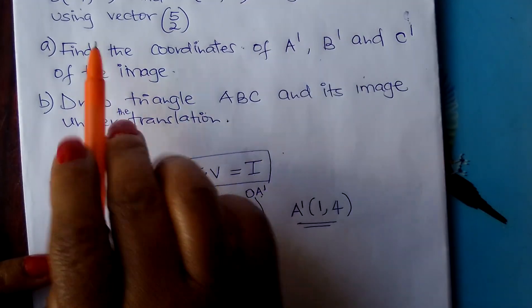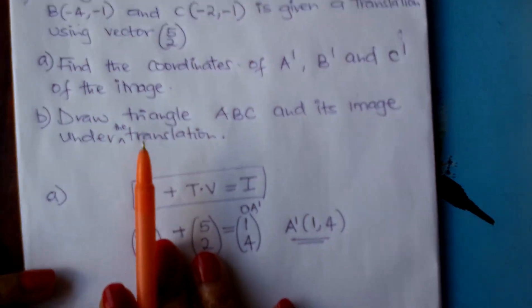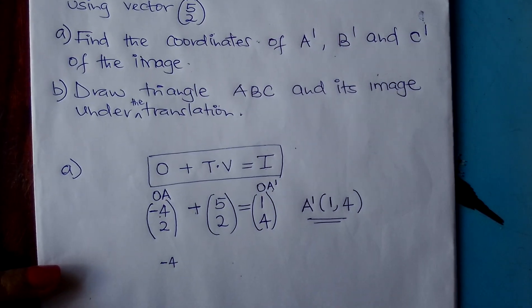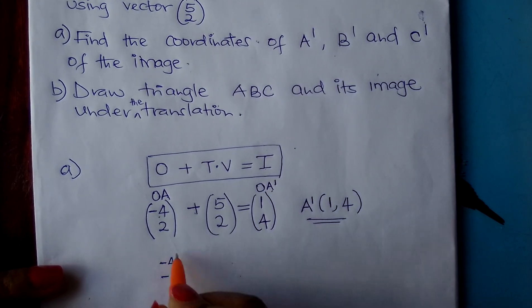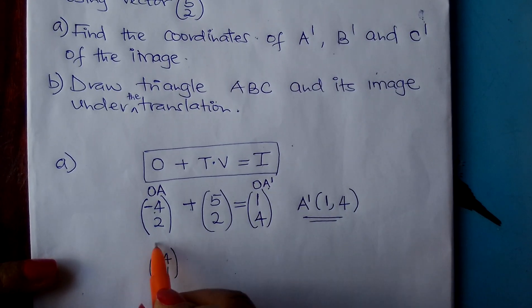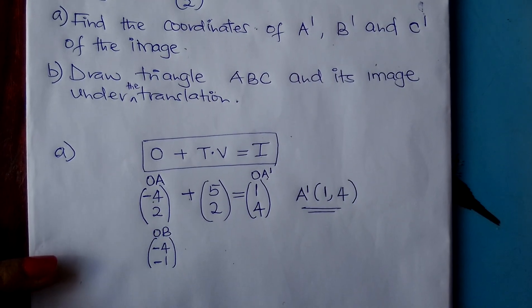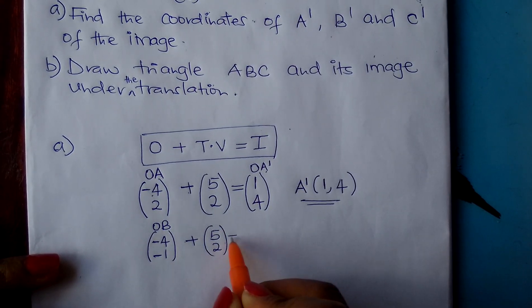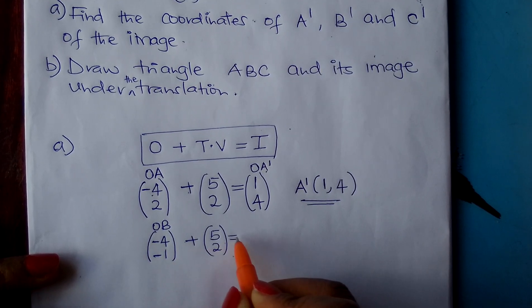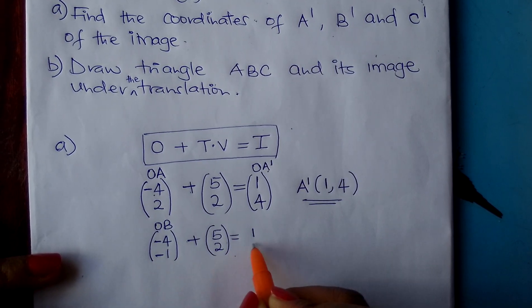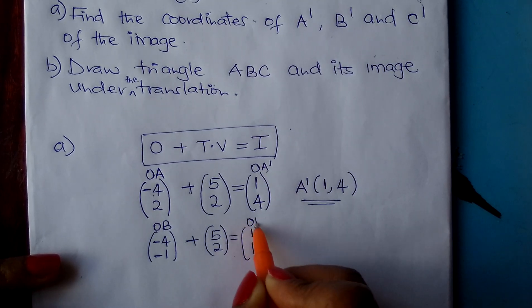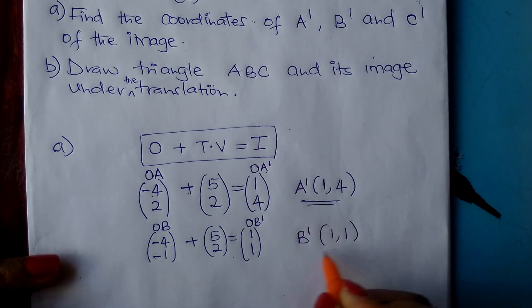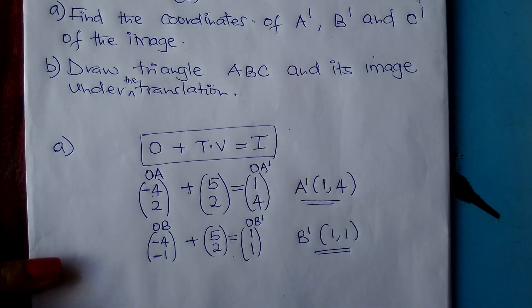We go to B. B is at (-4, -1). Write it as OB = (-4, -1). Then add the vector (5, -2). Negative 4 plus 5 gives you 1, and negative 1 plus 2 gives you 1. This is OB', the position vector of B'. Therefore B' is at (1, 1).